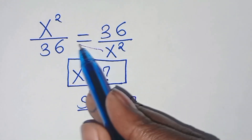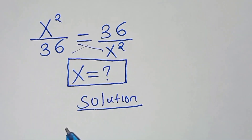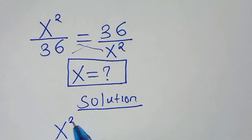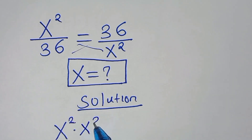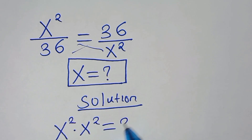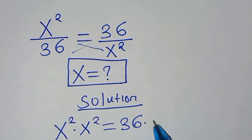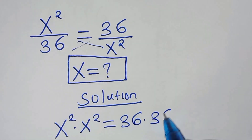Let's cross multiply. We have x to power 2 times x to power 2 on the left, and this is equal to 36 times 36 on the right.